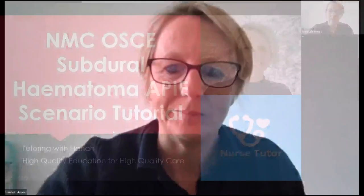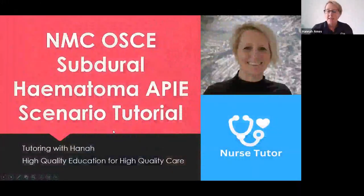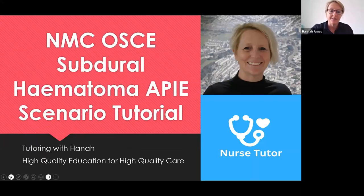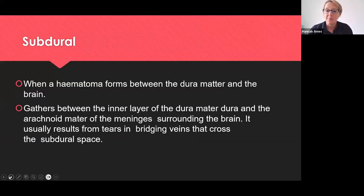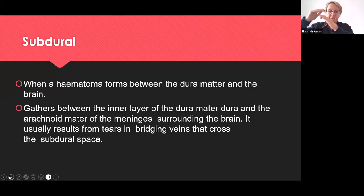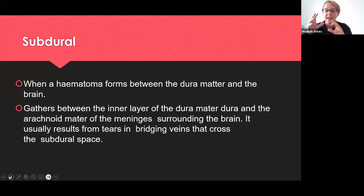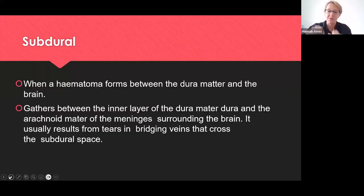Today we're going to be looking at the subdural hematoma. For adult OSCE nurses, you've got your 12 potential API scenarios, and subdural hematoma is one of those. So what is a subdural hematoma? It's when a hematoma or blood clot forms between the dura mater and the brain, gathering in the inner lining between the dura mater and the arachnoid mater, normally because there's been tearing or damage to those bridging veins within the subdural space.